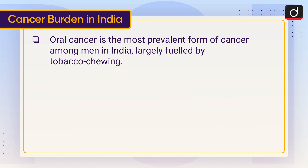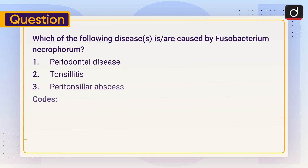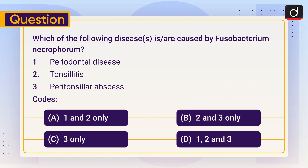Now it's time for the practice question. Which of the following diseases is or are caused by Fusobacterium necrophorum? One: periodontal disease. Two: tonsillitis. Three: peritonsillar abscess. Options are: one and two only, two and three only, three only, or one, two, and three. Send the answer in the comment section. Stay tuned for the next episode. Thanks for watching. Have a great day.